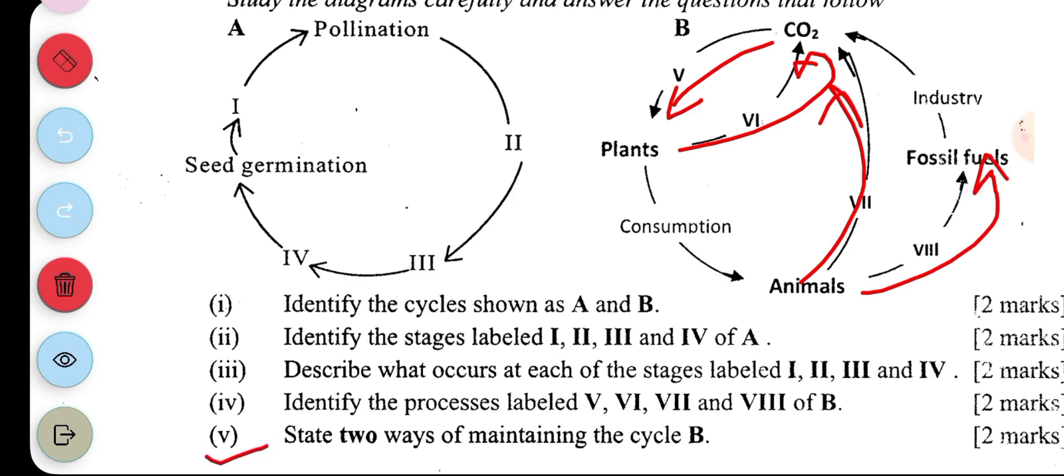Then the eight, if animals are turning to fossil fuel according to the carbon cycle, that's decomposition. Then part five is asking, state two ways of maintaining the cycle B. So the way to maintain cycle B is to plant more trees and then avoid burning of bushes.